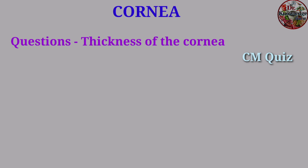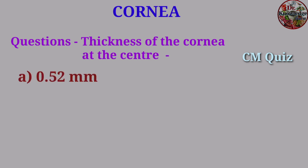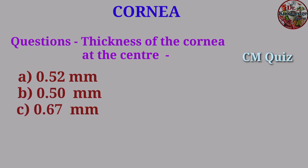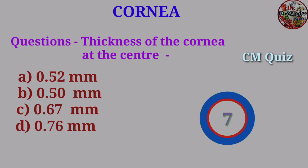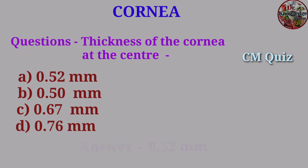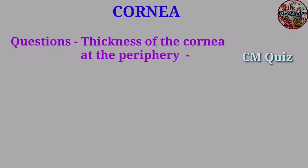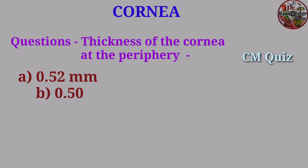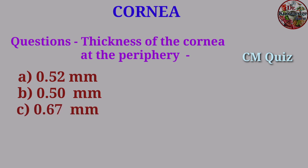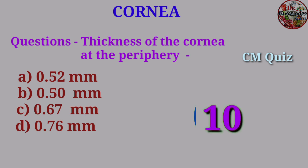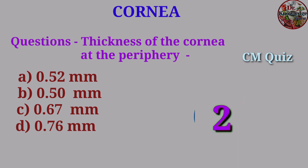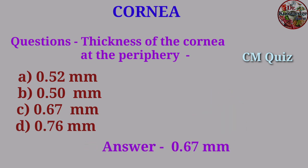Question: Thickness of the cornea at the center — A. 0.52 mm, B. 0.50 mm, C. 0.67 mm, D. 0.76 mm. Answer: 0.52 mm. Question: Thickness of the cornea at the periphery — A. 0.52 mm, B. 0.67 mm, C. 3.50 mm. Answer: 0.67 mm.